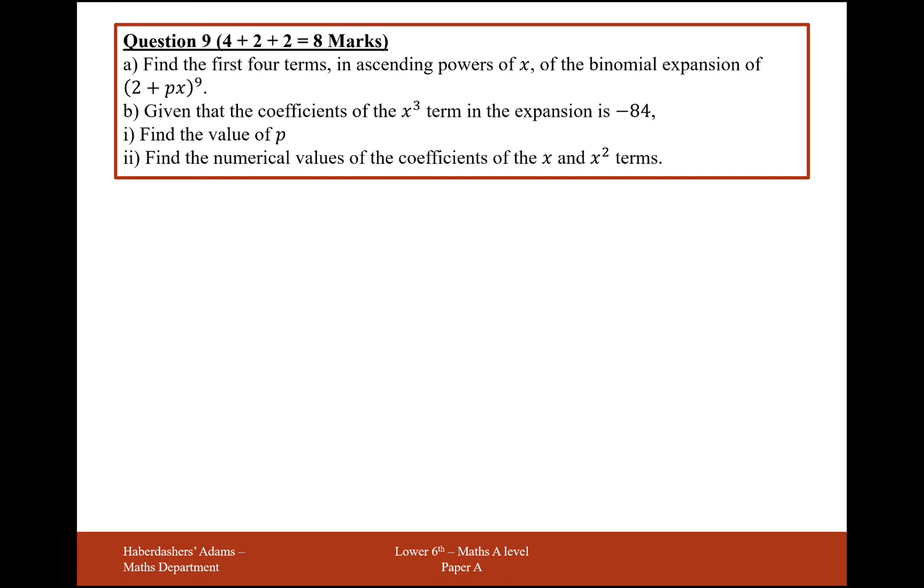Right, okay, so as soon as I think binomial expansion, grab the formula booklet and see what we've got here. So we have 2 + px, so I think the a here is representing the 2, the b here is representing px. If there was a negative in there I'd say that was minus px, but it's not, it's a positive. And the n here as the power is representing a 9.